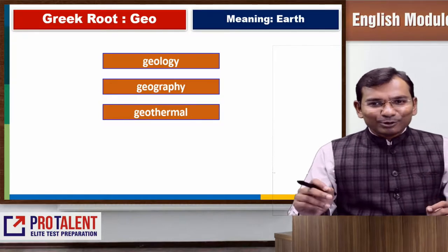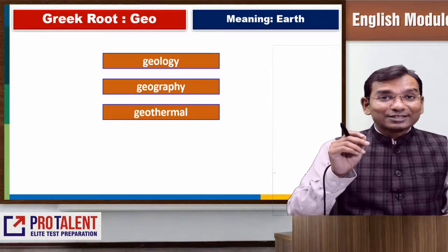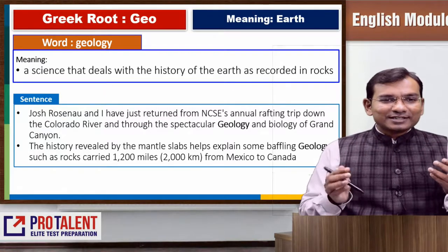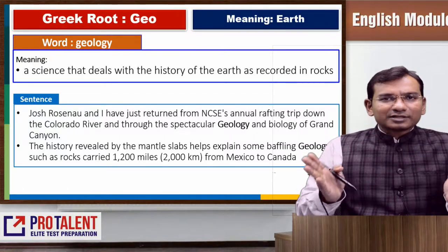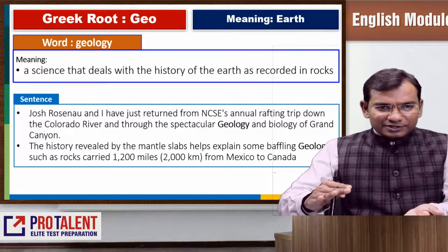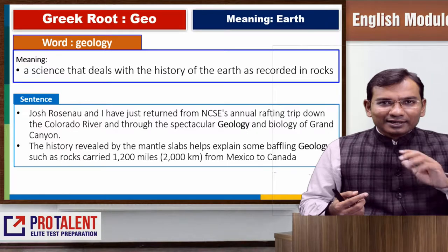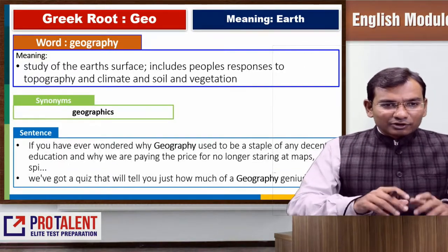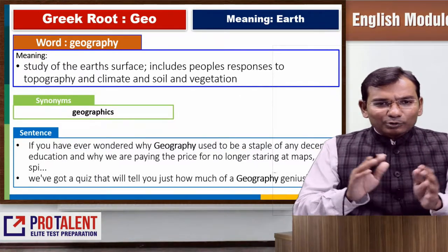GEO means earth. Geology is the science that deals with the earth's surfaces — it is the study of the earth. Geography refers to something written about the earth — a description of the earth's features.